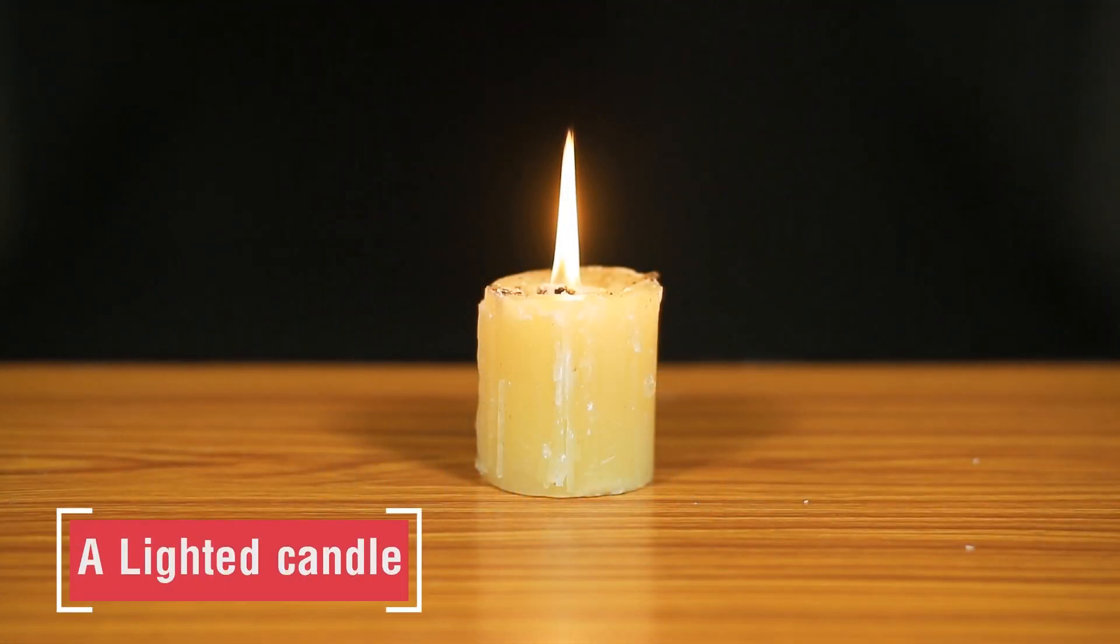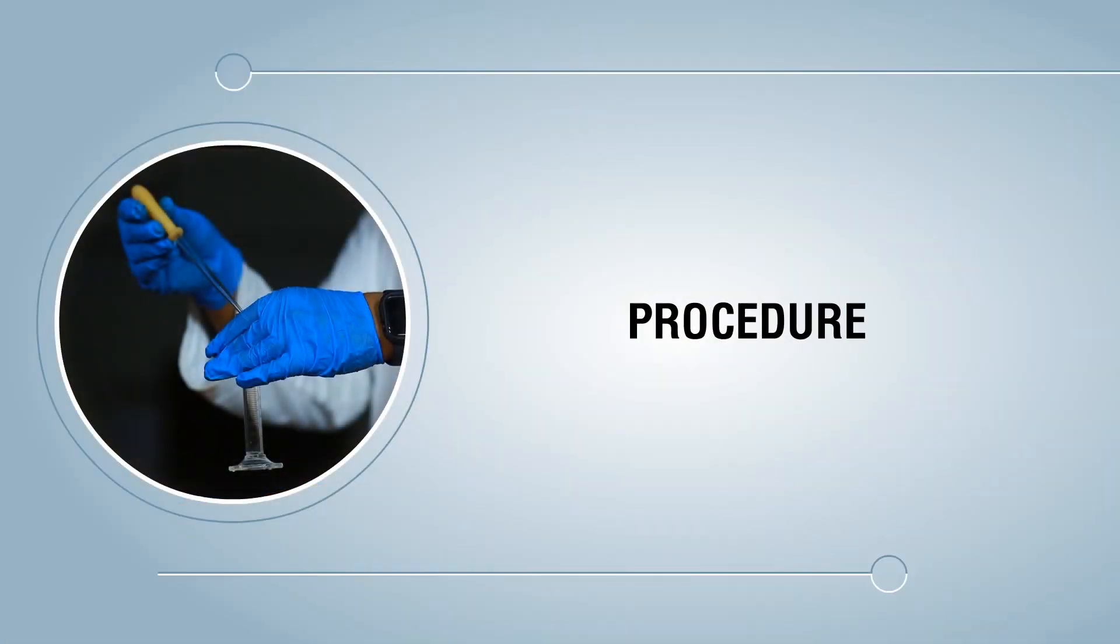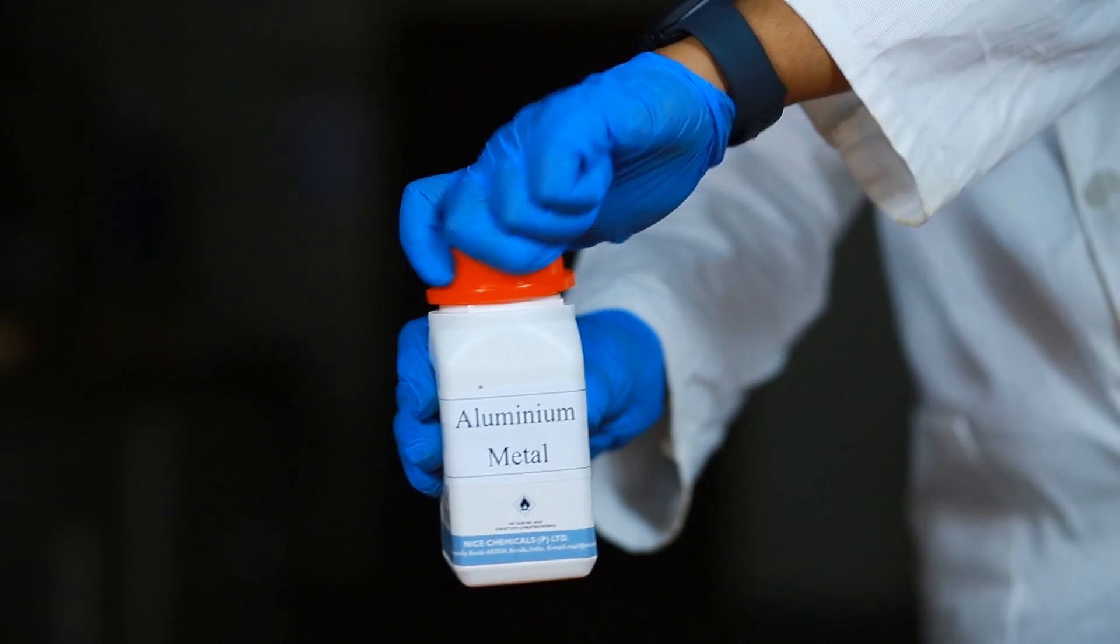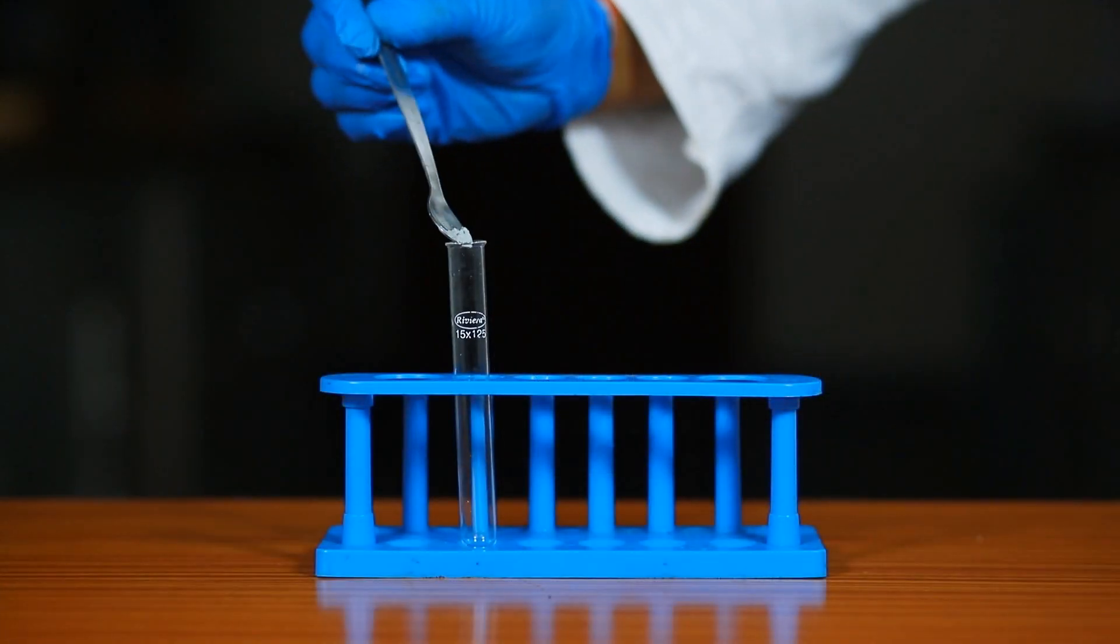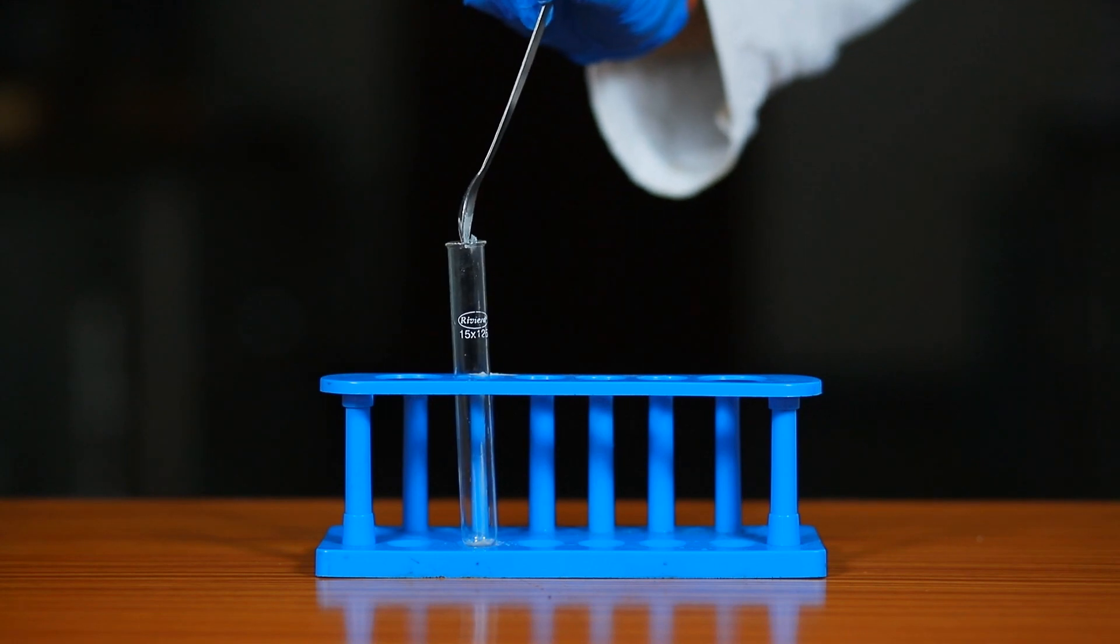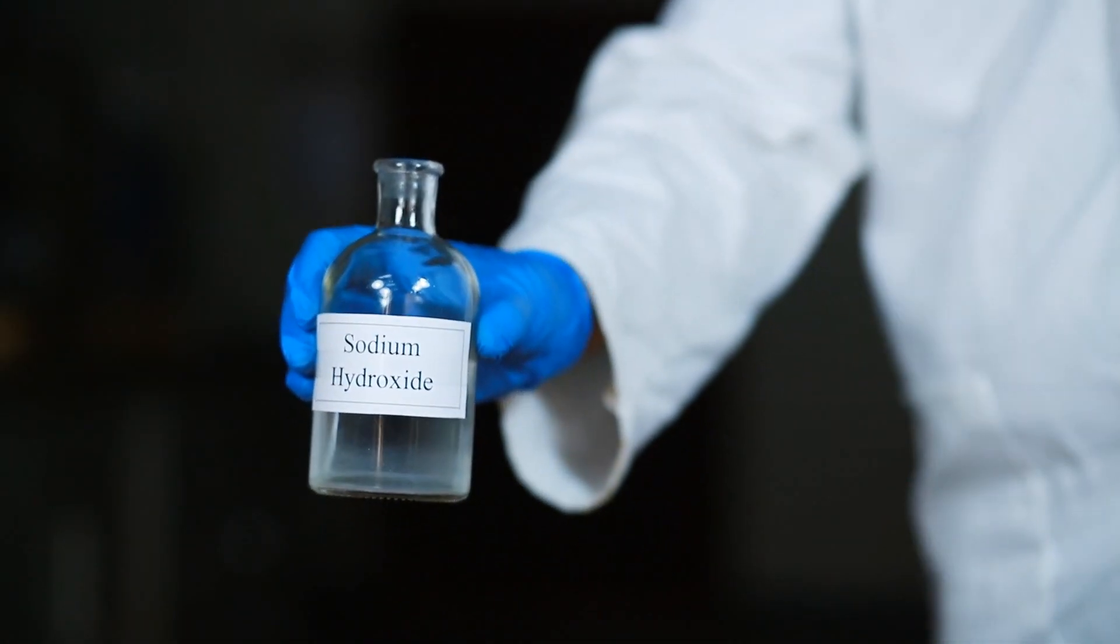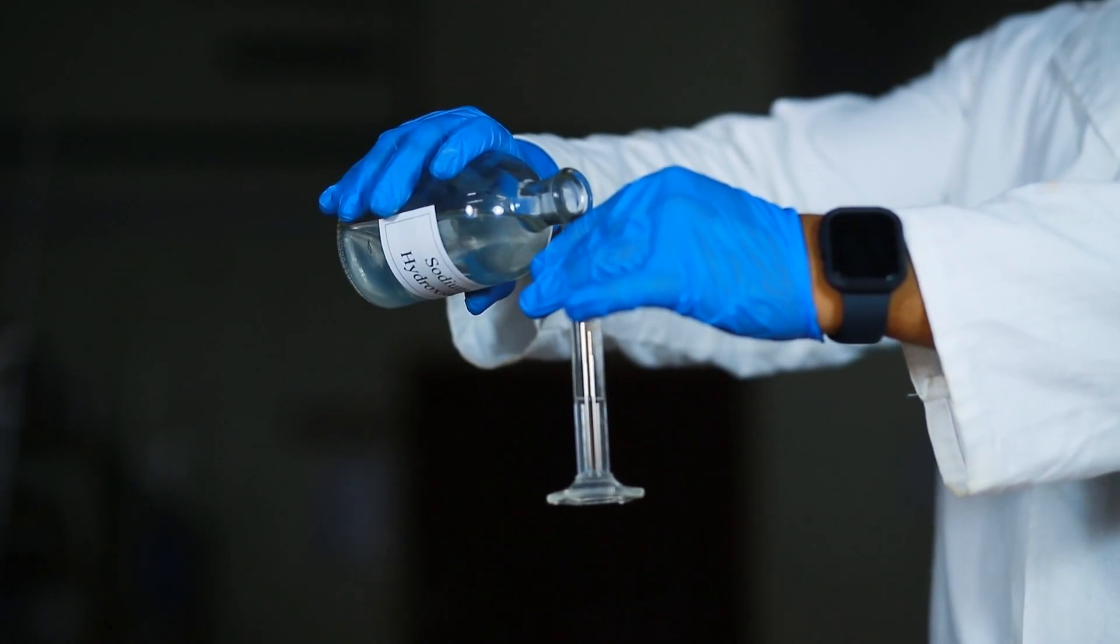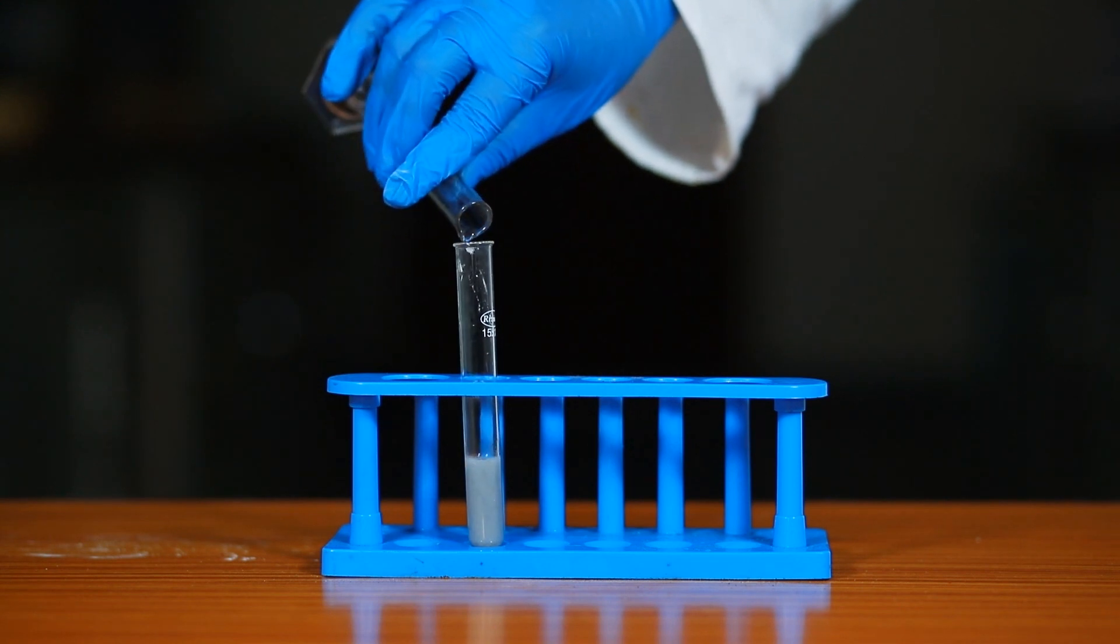Procedure: take two pieces of aluminium metal using a spatula and put the aluminium metal into a test tube placed in the test tube stand. Take about 5 ml sodium hydroxide solution in a measuring cylinder and pour it into the test tube containing aluminium metal.